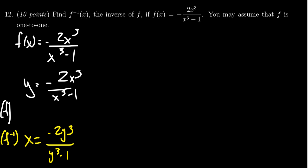Now we need to solve for y in this process. So to do that, since I have a y in the denominator here, I'm going to multiply both sides of the equation by y cubed minus 1, thus clearing the denominator. So these are going to cancel out on the right hand side. So we're going to get x times y cubed minus 1 equals negative 2y cubed.